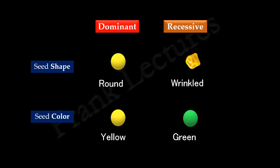So, round seed shape is represented by capital R, and wrinkled seed shape is represented by small r. Similarly, yellow seed color is represented by capital Y, and green seed color is represented by small y.